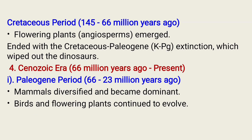The second period of the Mesozoic Era is the Cretaceous Period, known between 145 up to 66 million years ago. During this period, flowering plants, especially angiosperms, emerged. It ended with the Cretaceous extinction, which wiped out the dinosaurs.